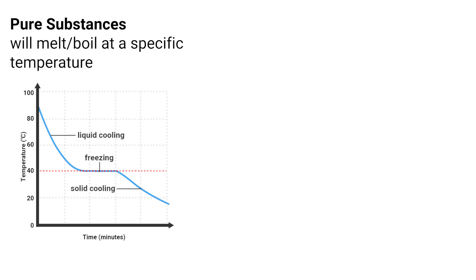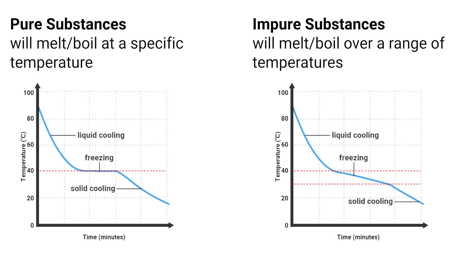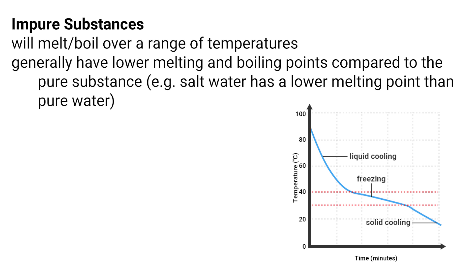Pure substances will melt and boil at specific temperatures whilst an impure substance or a mixture will melt and boil over a range of temperatures. We can see this in the two graphs on the screen now. If a substance is impure it will also generally have a lower melting and boiling point.